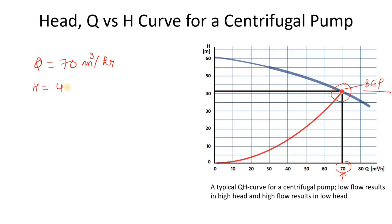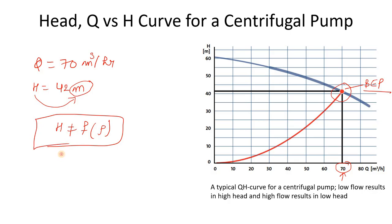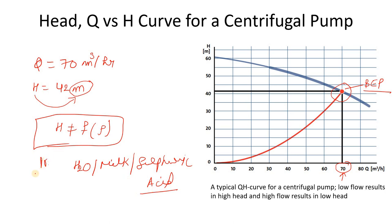The head unit is measured in meters. We use head rather than pressure in the pump curve because head is not a function of density — it means it doesn't matter whether you use that pump for water, milk, or sulfuric acid; the head remains constant. We cannot use pressure here because pressure changes with fluid density. That's why we provide the head versus flow rate curve.